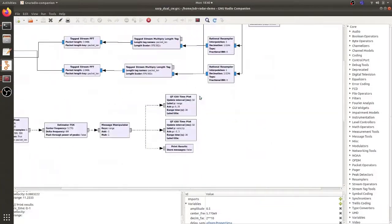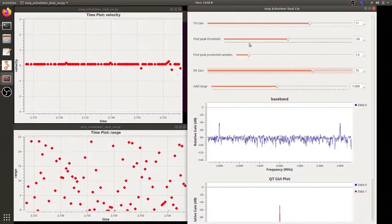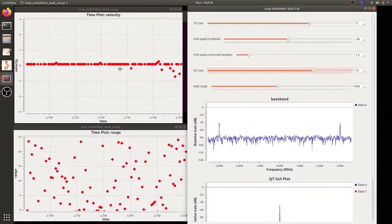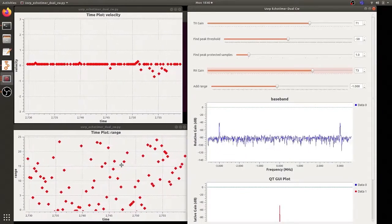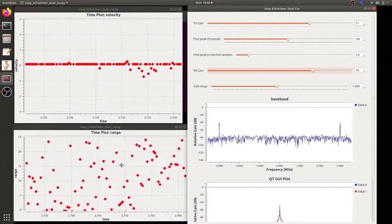So as you can see here in GNU Radio Companion, this is the example program here, we won't go through the details of this, but I got this running and you can see here that on this plot on the left is the velocity plot and in here on the range plot I'm getting a lot of scatter because I'm not tracking on a specific target.